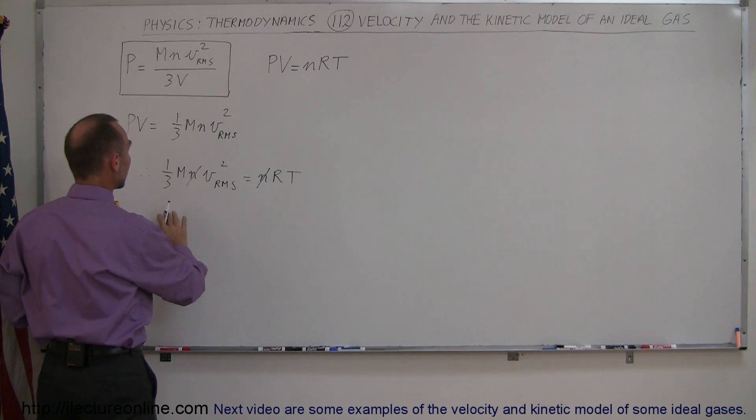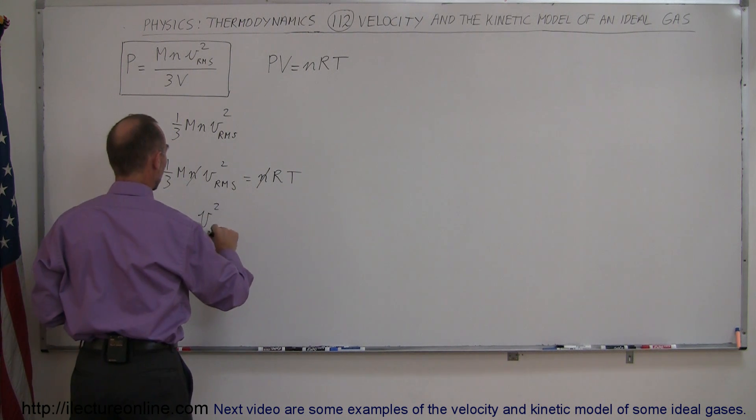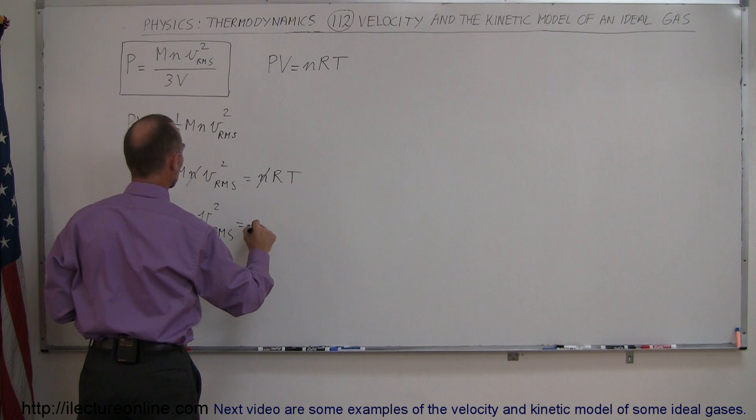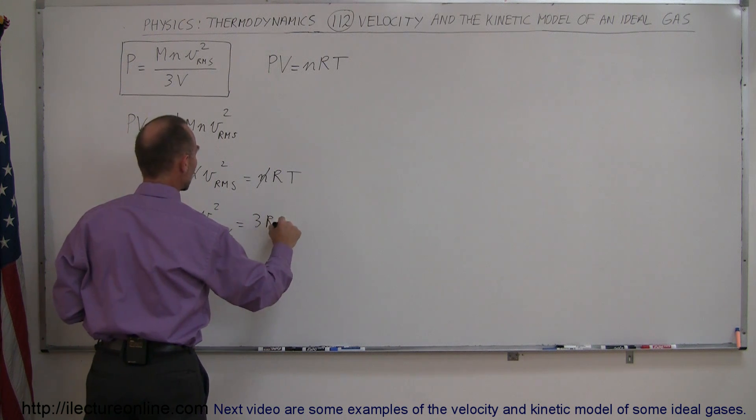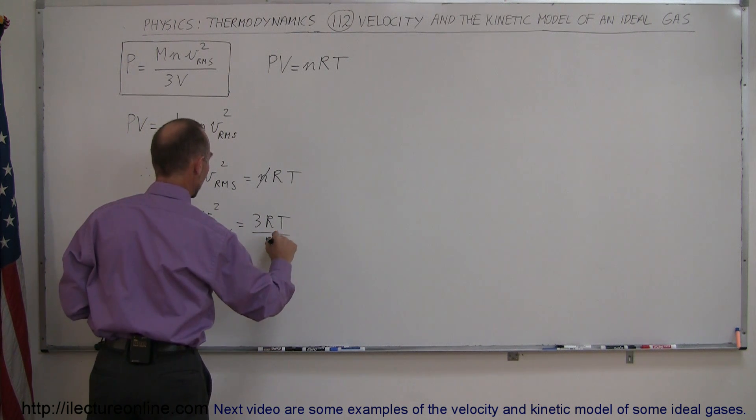Then we can go ahead and multiply both sides by 3 and divide both sides by the molar mass. So we have V squared RMS is equal to 3RT divided by the molar mass.